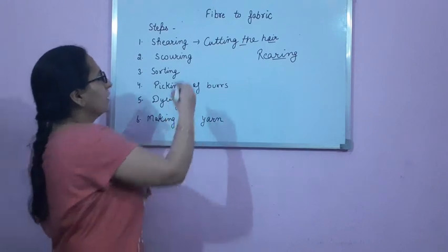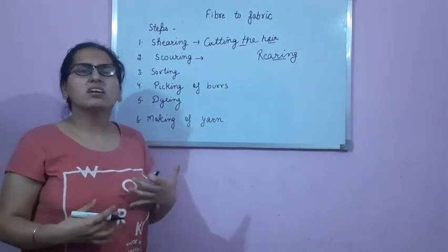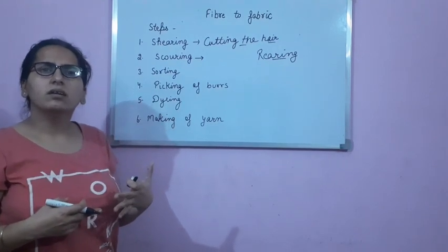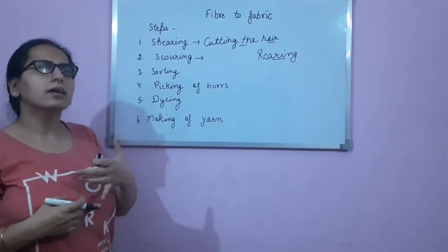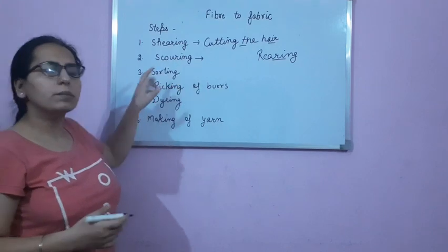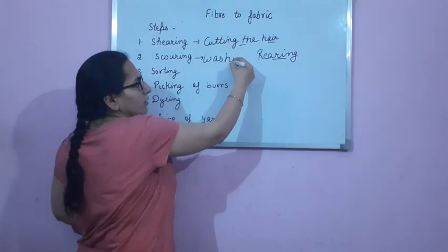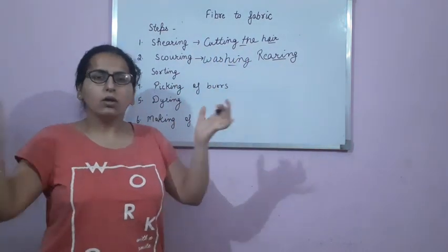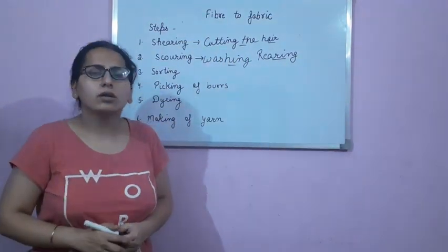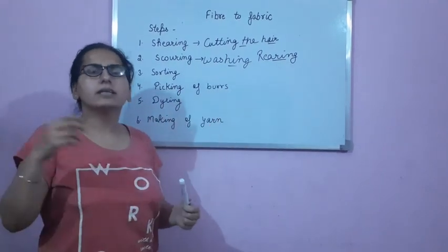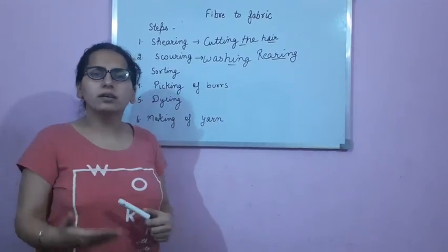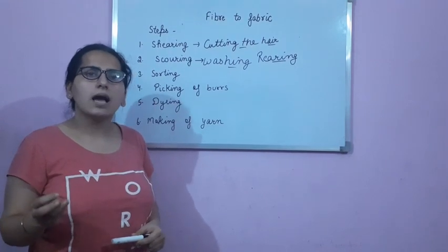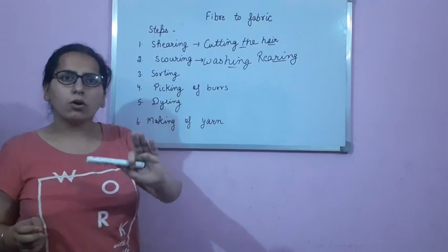After cutting the hair, the hair or the fleece of the sheep is mixed with dirt, dust, and grease. So scouring means washing the hair. We wash it in large tanks filled with water — we put the sheared fleece in and wash it to remove dirt, dust, and grease. This is scouring.